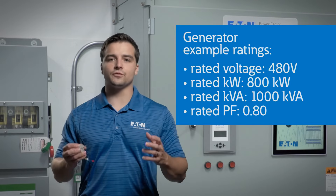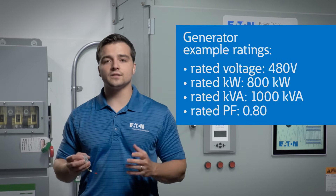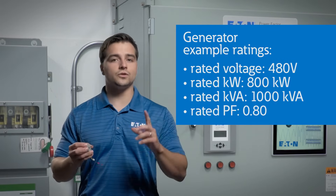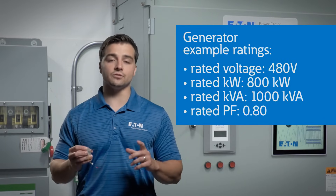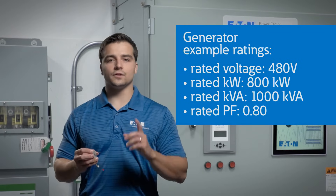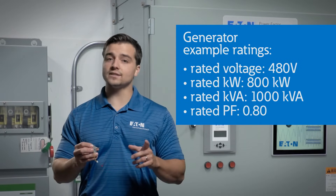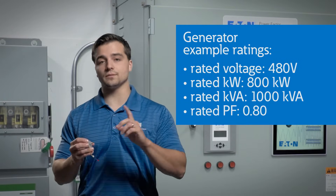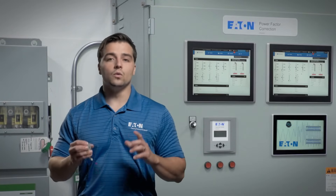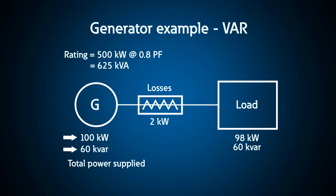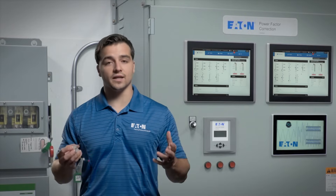Many people just reference the kilowatt rating, but you have to consider both to understand the actual capacity of a generator. Keep in mind that the load is what demands the reactive power that the generator then supplies. Without a load, there is no current, and you just have the open circuit voltage multiplied by a current of zero yielding no power at all. Remember, the armature windings are inductive so they play a role in the overall circuit when a load is connected.